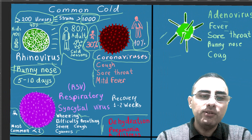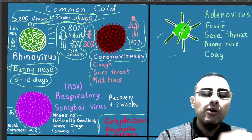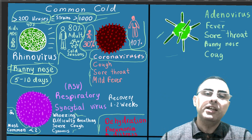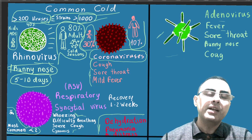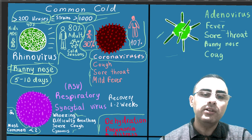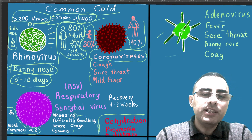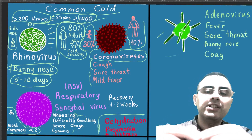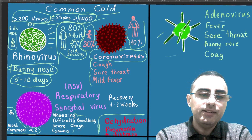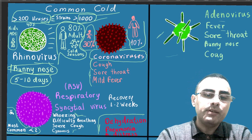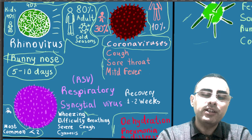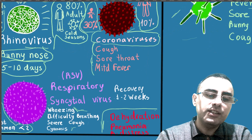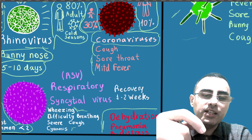To summarize: the common cold can be caused by more than 200 types of viruses and more than a thousand strains. Rhinovirus is the most common agent, present in 80% of cases. Coronaviruses are also very common — and we should differentiate these coronaviruses from COVID-19. RSV, or respiratory syncytial virus, is common among children, and wheezing is typical for this virus, along with difficulty breathing and cyanosis.